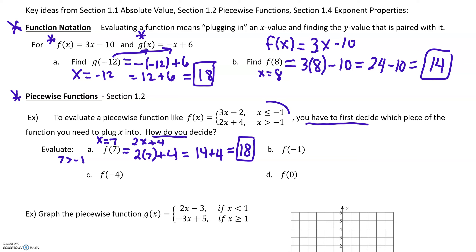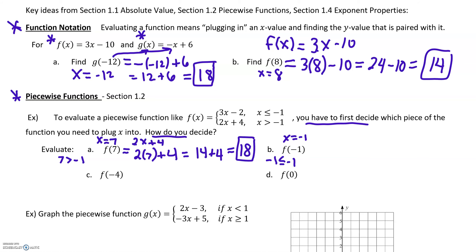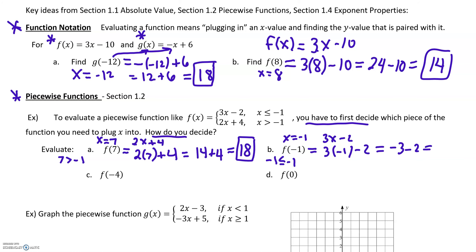We have to decide which interval negative 1 is in. Negative 1 is less than or equal to negative 1, but it's not greater than negative 1. So x equals negative 1 satisfies the first inequality, meaning we use y equals 3x minus 2. Replace x with negative 1: 3 times negative 1 is negative 3, take away 2, we get negative 5.